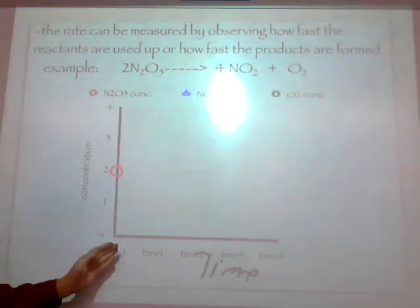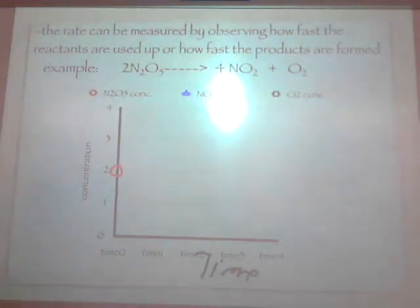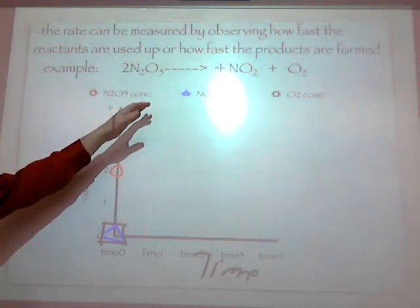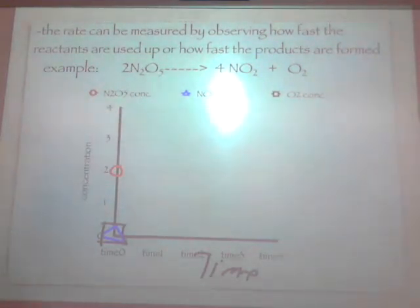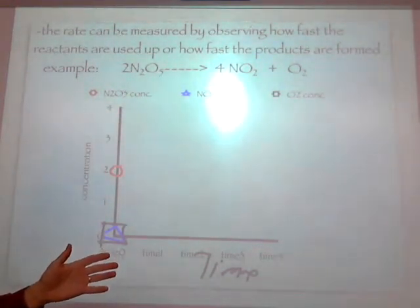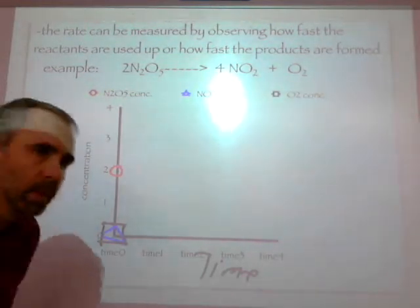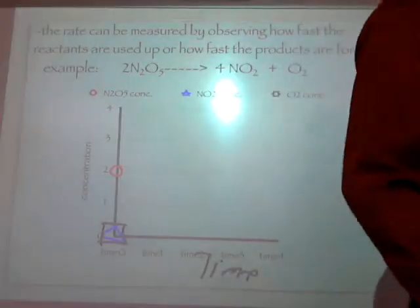So at time 0, before it reacts, my blue triangle and my black square are at 0. And my red reactant, N₂O₅, I have 2 moles of. Now I also know where these guys are going to end, don't I? And all we want you to figure out is what we're going to put in between them.